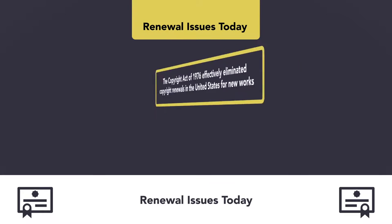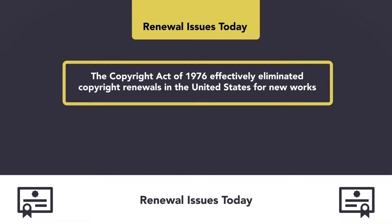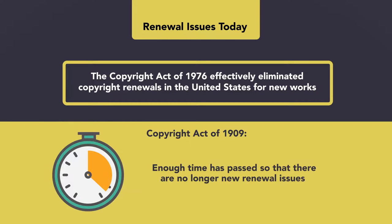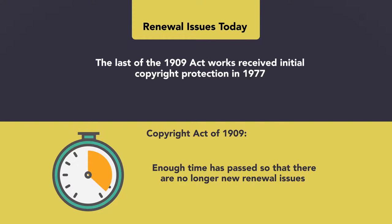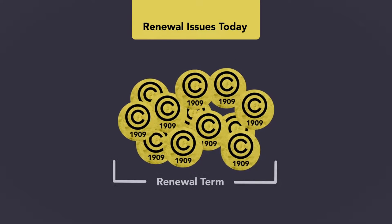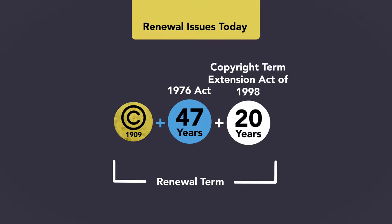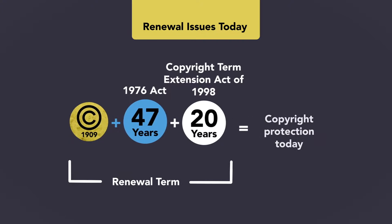The Copyright Act of 1976 effectively eliminated copyright renewals in the United States for new works. As for works still subject to the Copyright Act of 1909, enough time has now passed so that there are no longer new renewal issues. The last of the 1909 Act works received initial copyright protection in 1977, so those initial terms would have expired in 2005. There are, however, numerous 1909 Act works currently in their renewal terms, thanks to the 1976 Act's extended renewals of 47 years and the Copyright Term Extension Act of 1998, which provided an additional 20 years. Many works originally protected under the 1909 Act remain under copyright protection today.